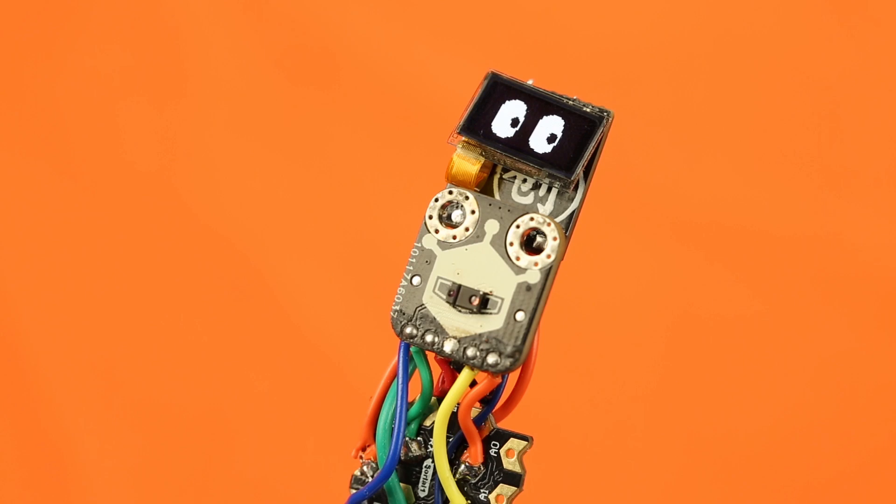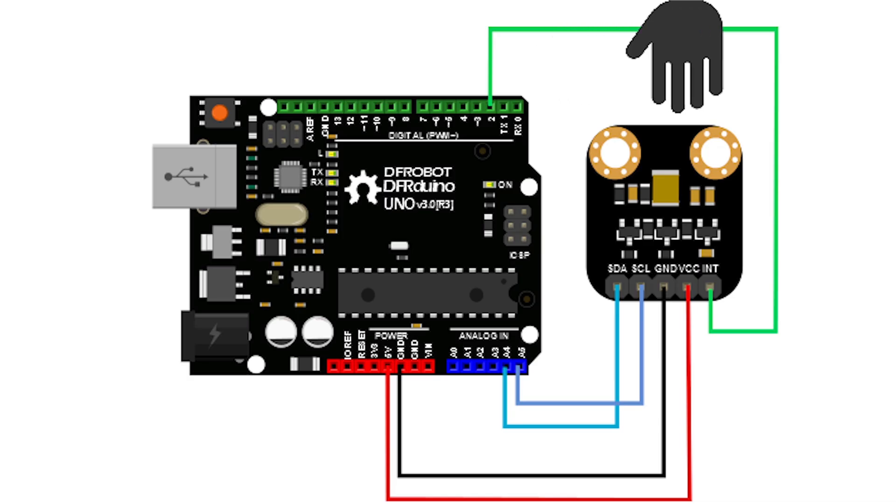The signal works as following. An interrupt signal will be generated when the gesture is detected. Then the microcontroller receives detailed information through the I2C bus.